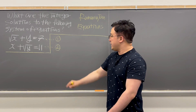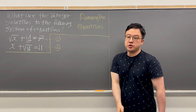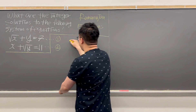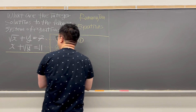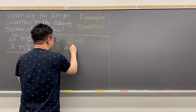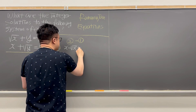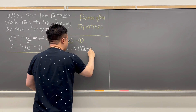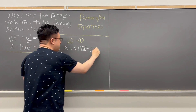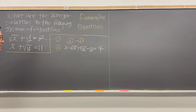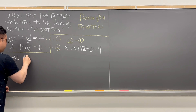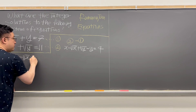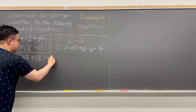I'll be subtracting equation number 1 from equation number 2 — so we're doing 2 minus 1. Then we will have x minus √x, plus √y minus y, which is equal to 11 minus 7, that is 4. Let's rewrite this as x minus y, minus √x plus √y, which is still equal to 4.